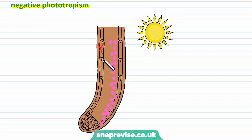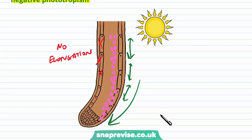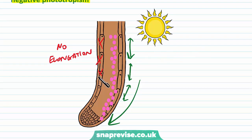So just remember: auxin always moves away from the light, but in the shoot tips it encourages elongation, bending the shoots towards the light. In the root tips it inhibits elongation so that the opposite side bends the roots away from the light.